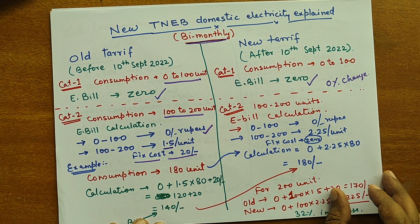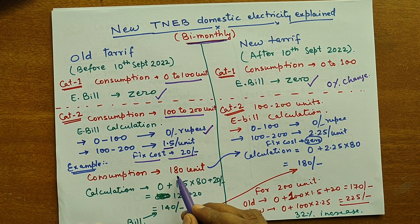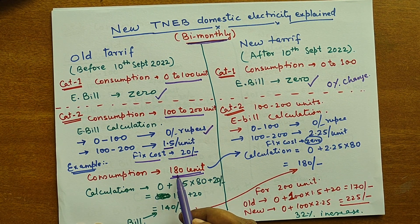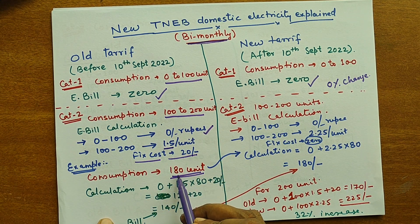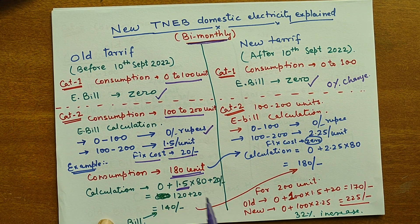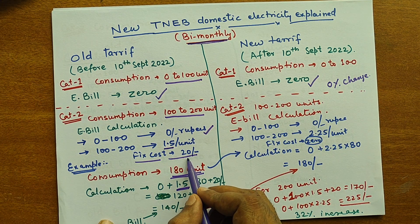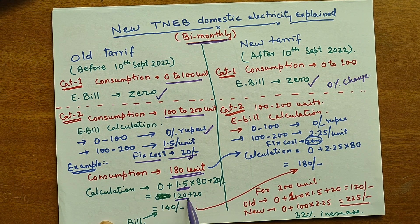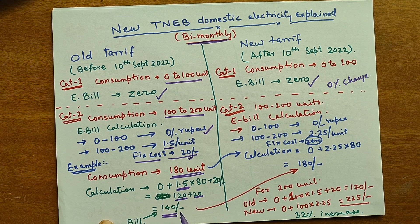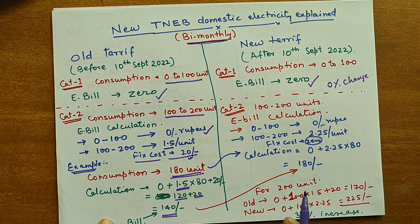For example, for 180 unit consumption: 100 units are free and the remaining 80 units cost 1.5 rupees per unit, which is 120 rupees, plus 20 rupees fixed cost. So your electricity bill will be 140 rupees for 180 unit consumption.